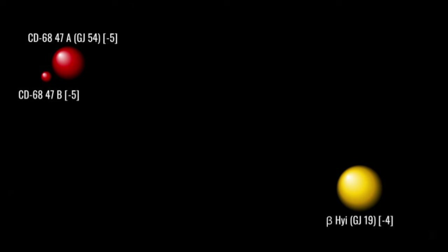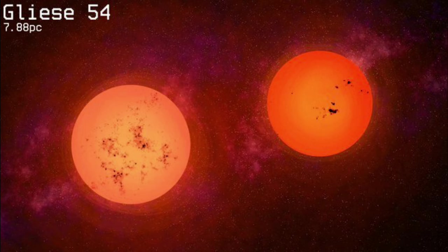Rimward and 1 parsec south, we arrive at Gliese 54, a pair of red dwarfs about 40 and 30% the mass of the sun, respectively, orbiting each other roughly every 427 days. It is suspected, though not yet confirmed, that the largest of the two stars is variable.